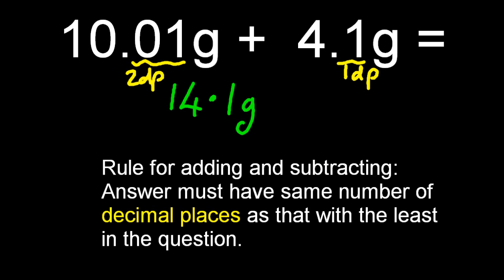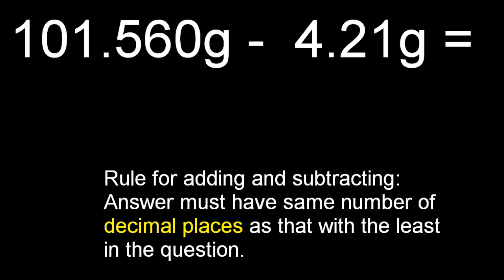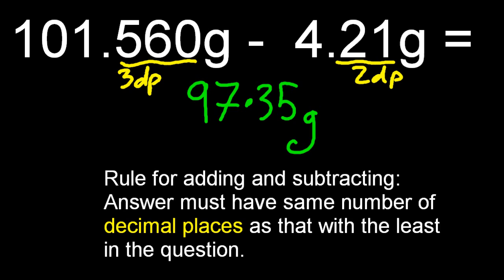A subtraction, same rule, follow the decimal places. So that would give me 97.35 grams. Let's just check the rules. Three decimal places there, two decimal places there. So my answer must have two decimal places, which indeed it does.